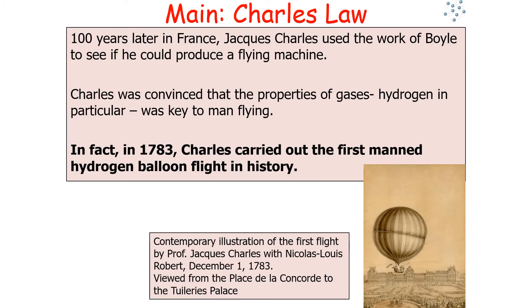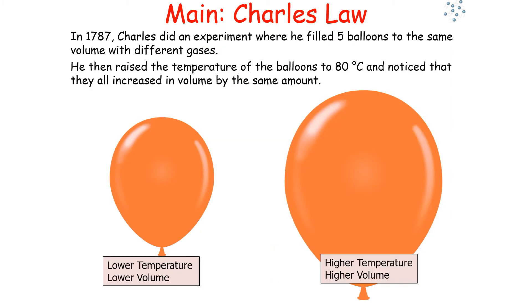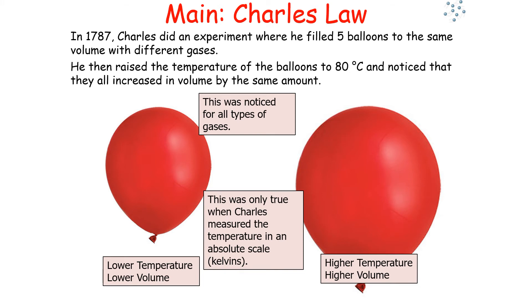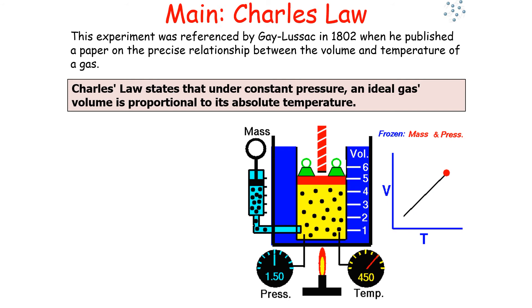The second law is called Charles' law, because 100 years later in France, Jacques Charles used the work of Boyle to see if he could produce a flying machine. Charles was convinced that the properties of gases, hydrogen in particular, were key to humans flying. In 1783, Charles carried out the first manned hydrogen balloon flight in history. In 1787, he filled five balloons to the same volume with different gases, raised the temperature to about 80 degrees Celsius, and noticed they all increased in volume by the same amount. This was true for all types of gases, and was referenced by Gay-Lussac in 1802 when he published a paper on the relationship between volume and temperature.